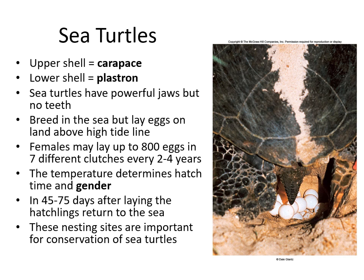Morphologically, they have an upper shell called the carapace and a lower shell called the plastron, sharing the same characteristics with terrestrial or freshwater turtles. They have very powerful jaws but no teeth, and they mate in the sea. Males and females congregate for mating at sea, but lay their eggs on the beach above the high tide line, so the eggs are not submerged over the course of the tides. Females may lay up to 800 eggs in seven different clutches every two to four years.